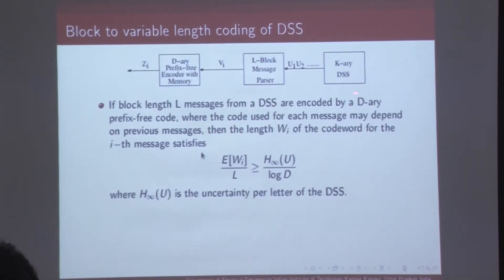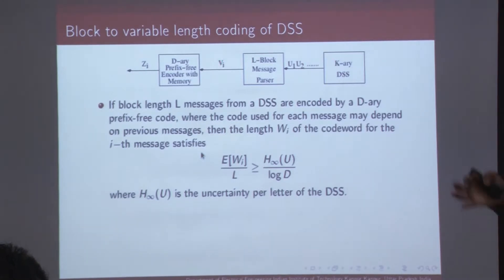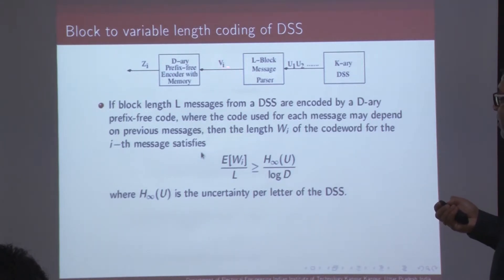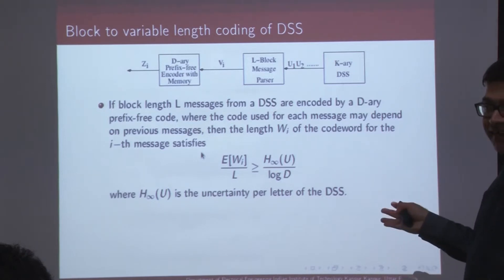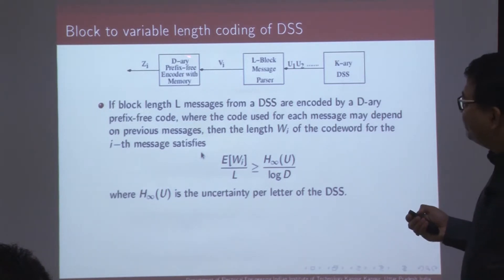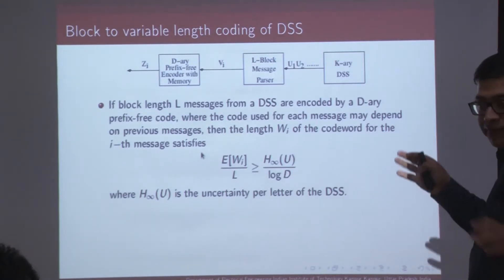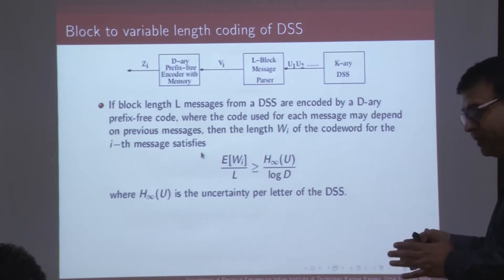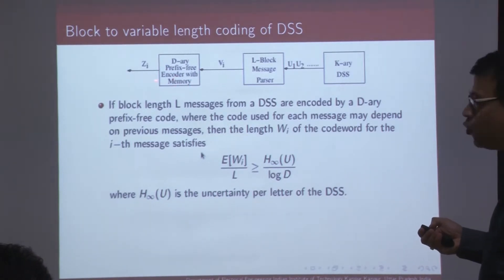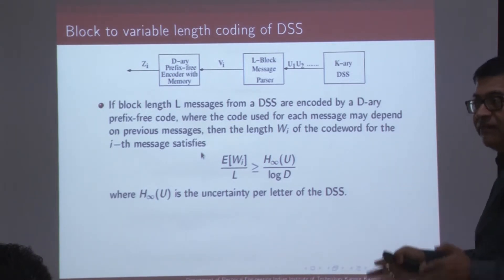The problem we are looking at is as follows. We have a k-ary discrete stationary source with some memory mu. There are bits coming out from there, and we are considering block-to-variable length coding. What we are doing is making a block of length L from these bits, and then using a variable length coding to code this block of length L into a codeword Z.